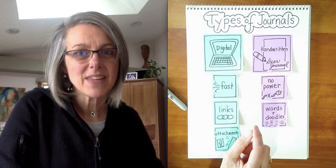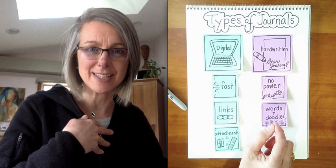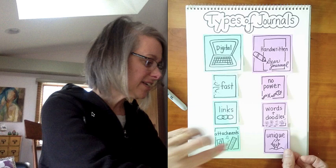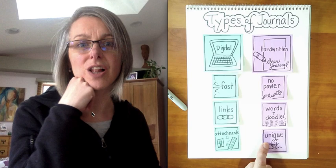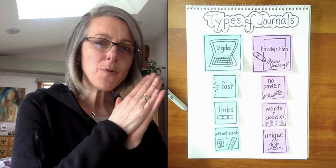In a handwritten journal, it's really easy to do words and doodles. And many historians, when they talk about journals that have been really helpful for them to learn from, they say that it's sometimes the handwriting of the person that also lets them know something about that time period. So sometimes people will say that a handwritten journal can be more unique because all of our handwriting is unique to us. And that gives you a little bit more of a sense of the person who was writing it.